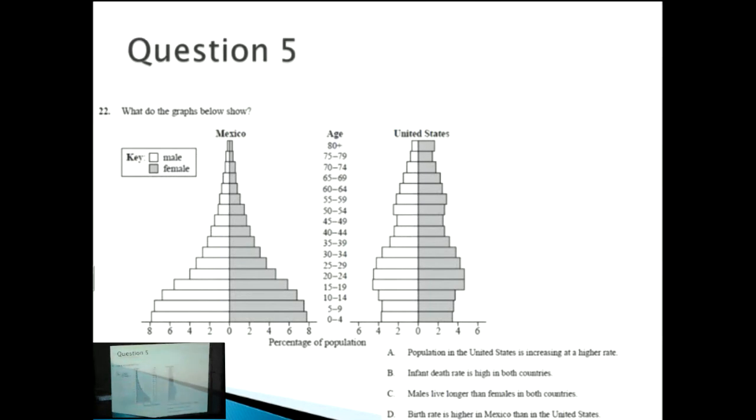So the final question, what do the graphs below show? We've got a graph of what seems to be like the percentage of the population at the different age ranges that are available. And we're comparing both Mexico as well as the United States. Our questions are down here below. What can we gather from the graph? A, the population in the United States is increasing at a higher rate. Well, we don't even have any data on the rate of population increase right now. So it's another one of those red herring answers. Just be careful. So I'm going to ignore that one for now.